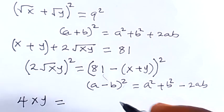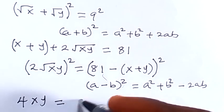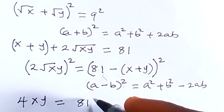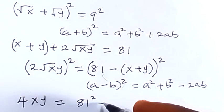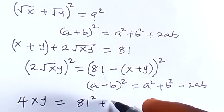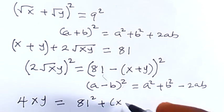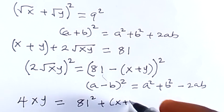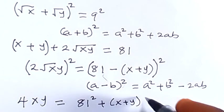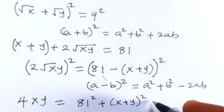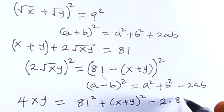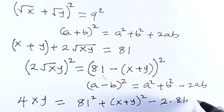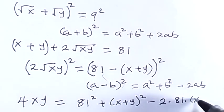So 4xy equals 81 squared, then plus (x + y)², then minus 2 times 81 times (x + y).